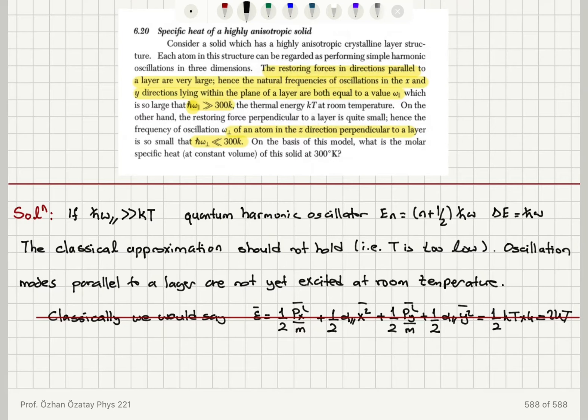On the other hand, if we consider the oscillations perpendicular to the layer, so only those oscillations where we have h-bar omega perpendicular much less than 300 times k, the kT value at room temperature kTr, these modes are excited and classical approximation holds.